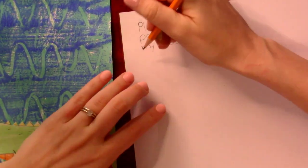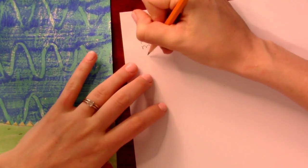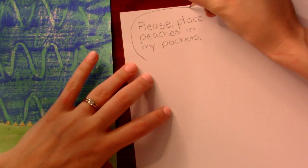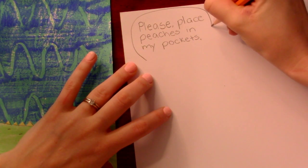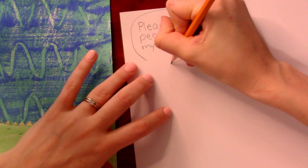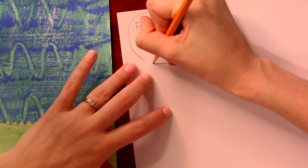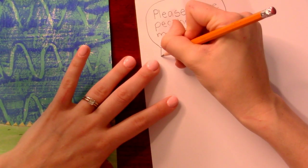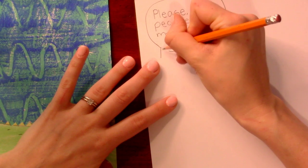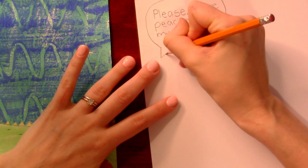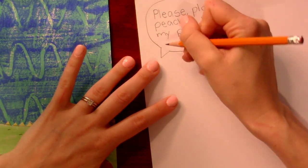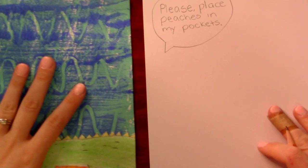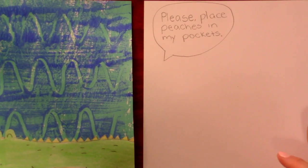Now I'm going to turn this into a speech bubble, so I'm just going to circle around it. And then before the circle is all the way closed, I'm going to put a little — it's sort of like a triangle, but just two lines, like a letter V. Okay, so there — there's one of mine.